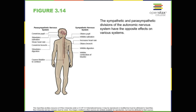Once the threat has been resolved, the parasympathetic nervous system takes over and returns bodily functions to a relaxed state. Our hunter's heart rate and blood pressure return to normal, his pupils constrict, he regains control of his bladder, and the liver begins to store glucose in the form of glycogen for future use. These processes are associated with activation of the parasympathetic nervous system.